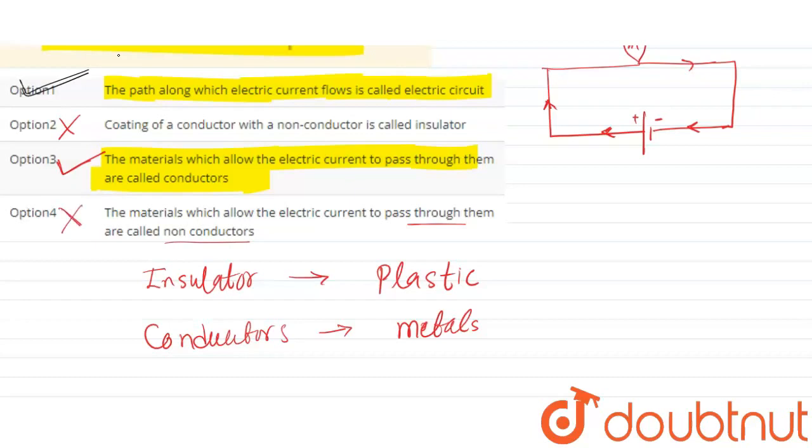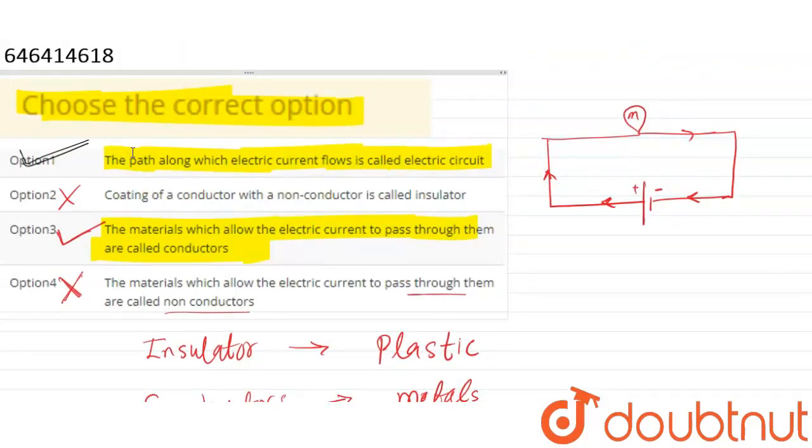If the third one is correct, this will automatically be wrong. Non-conductor is not the correct term; insulator is correct. So only the first and third options are correct.